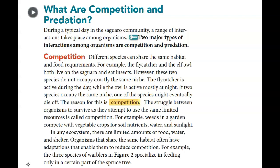The struggle between organisms to survive as they attempt to use the same limited resources is called competition. For example, weeds in a garden compete with vegetable crops for soil nutrients, water, and sunlight. In any ecosystem there are limited amounts of food, water, and shelter. Organisms that share the same habitat often have adaptations that enable them to reduce competition — for example, three species of warblers in figure two specialize in feeding in a certain part of the spruce tree.